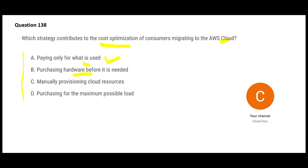Option B says processing hardware before it is needed. You never purchase hardware in the cloud. AWS already has the hardware. In the on-premises world you purchase hardware, but in AWS you never purchase hardware.